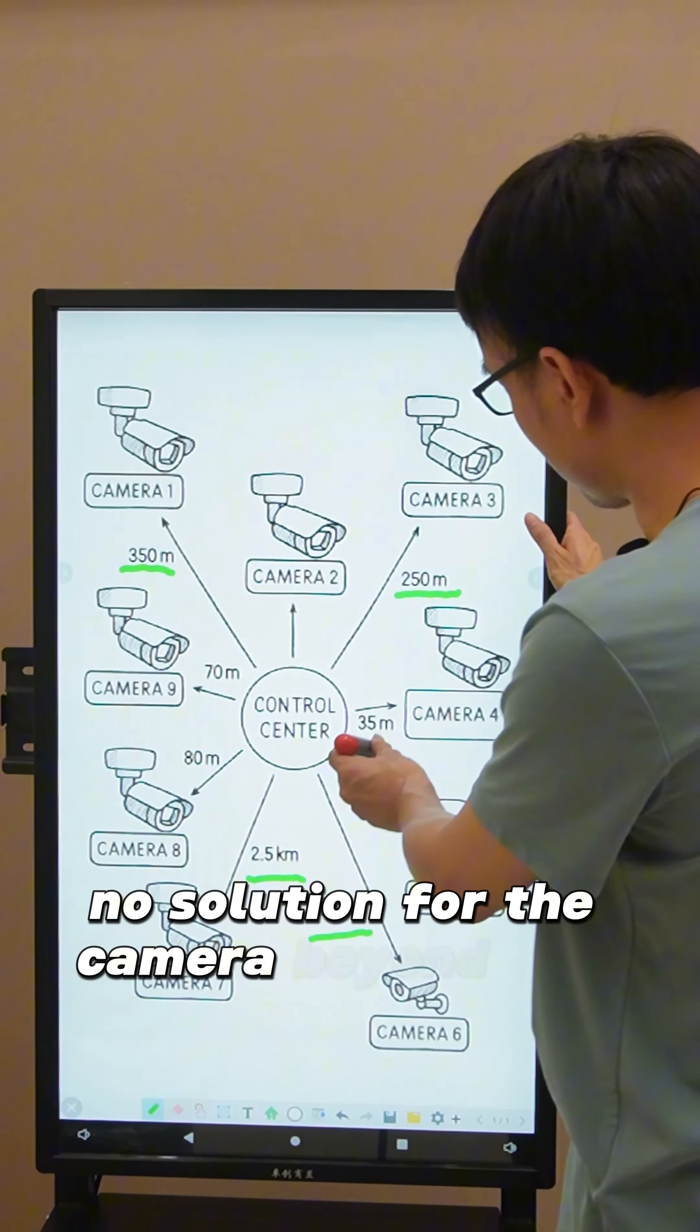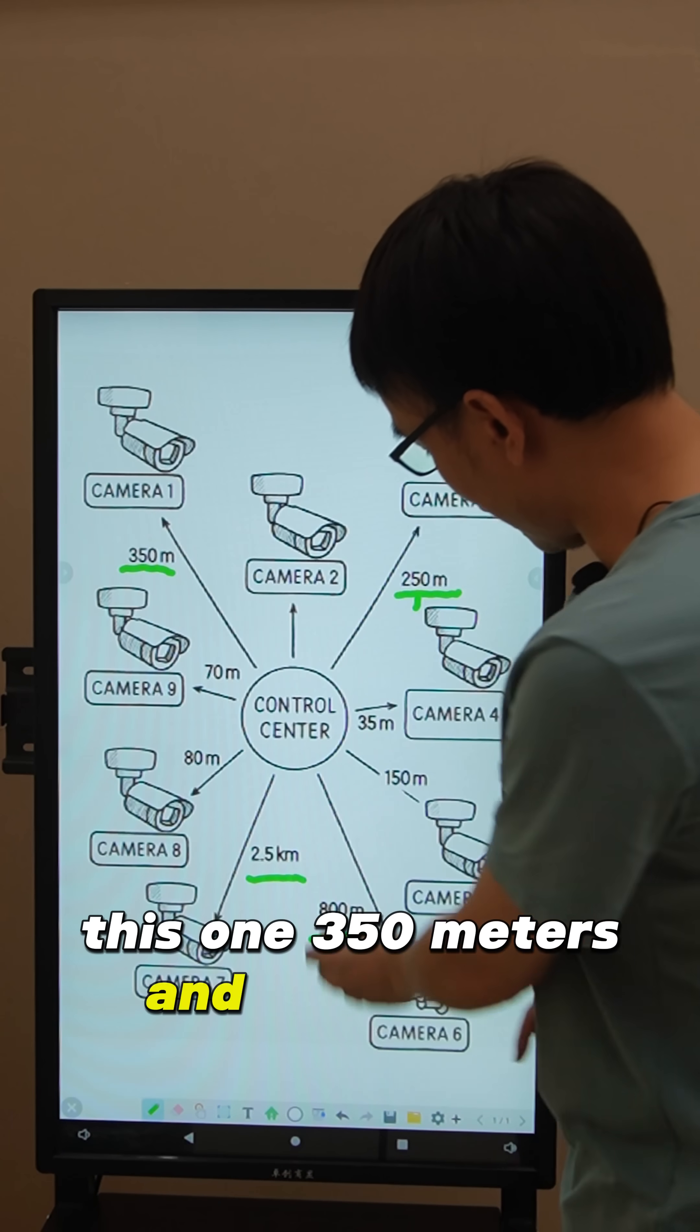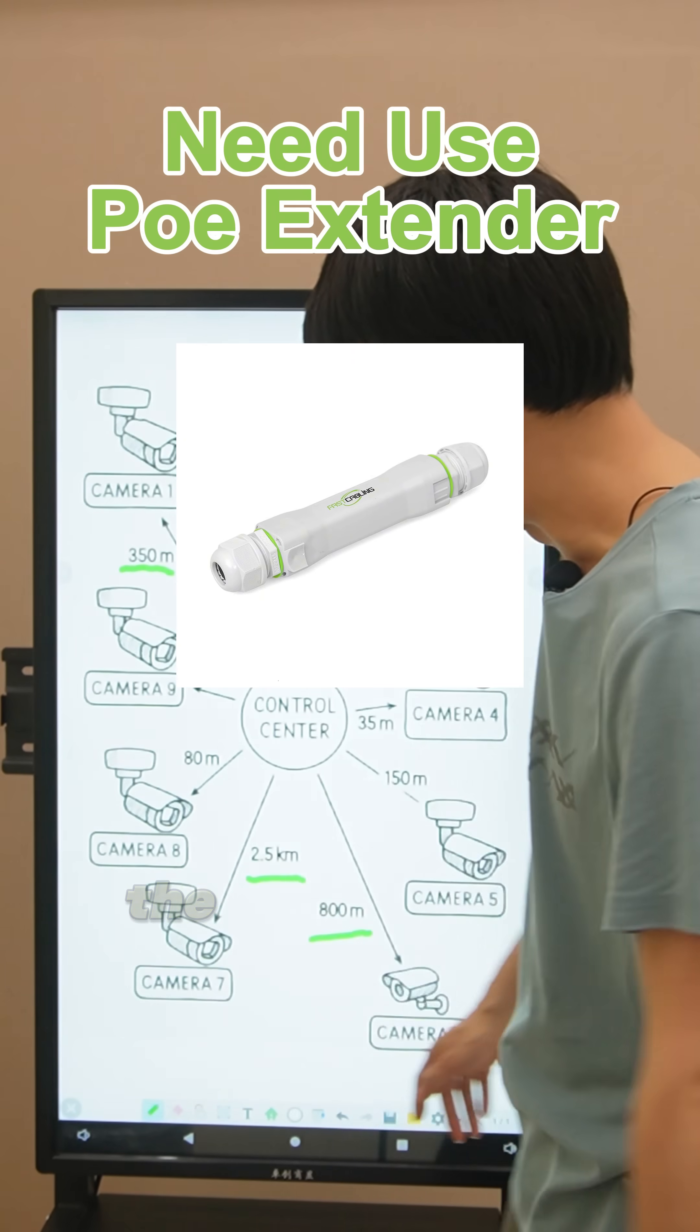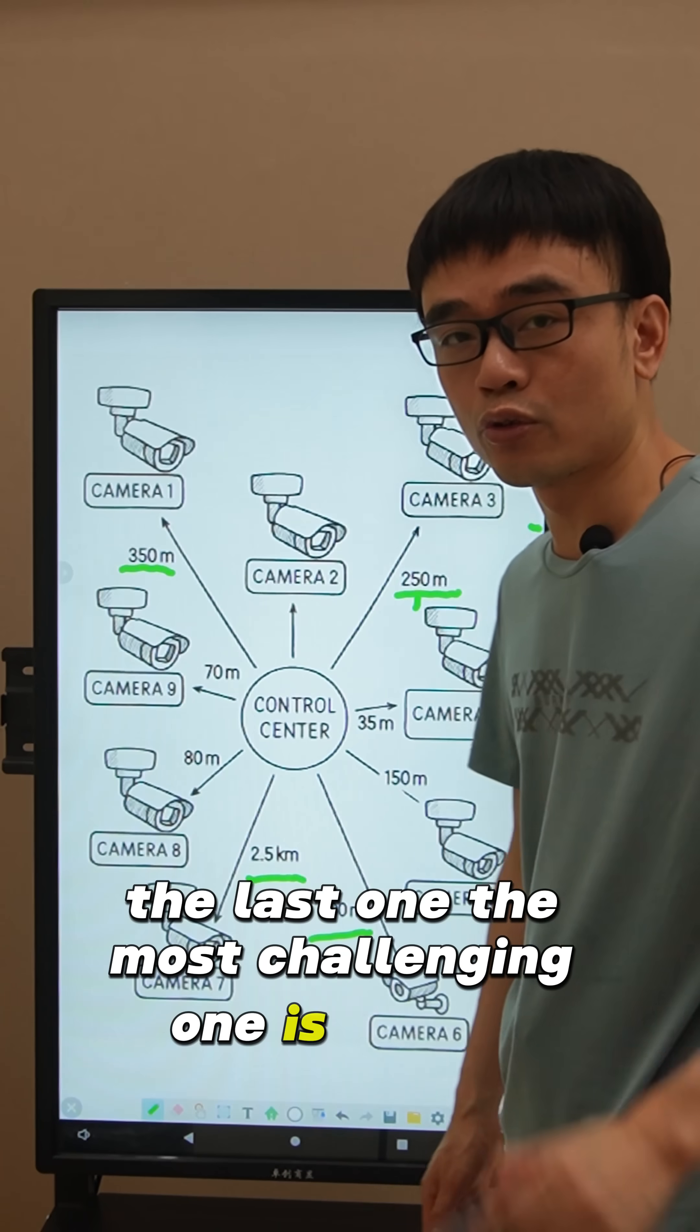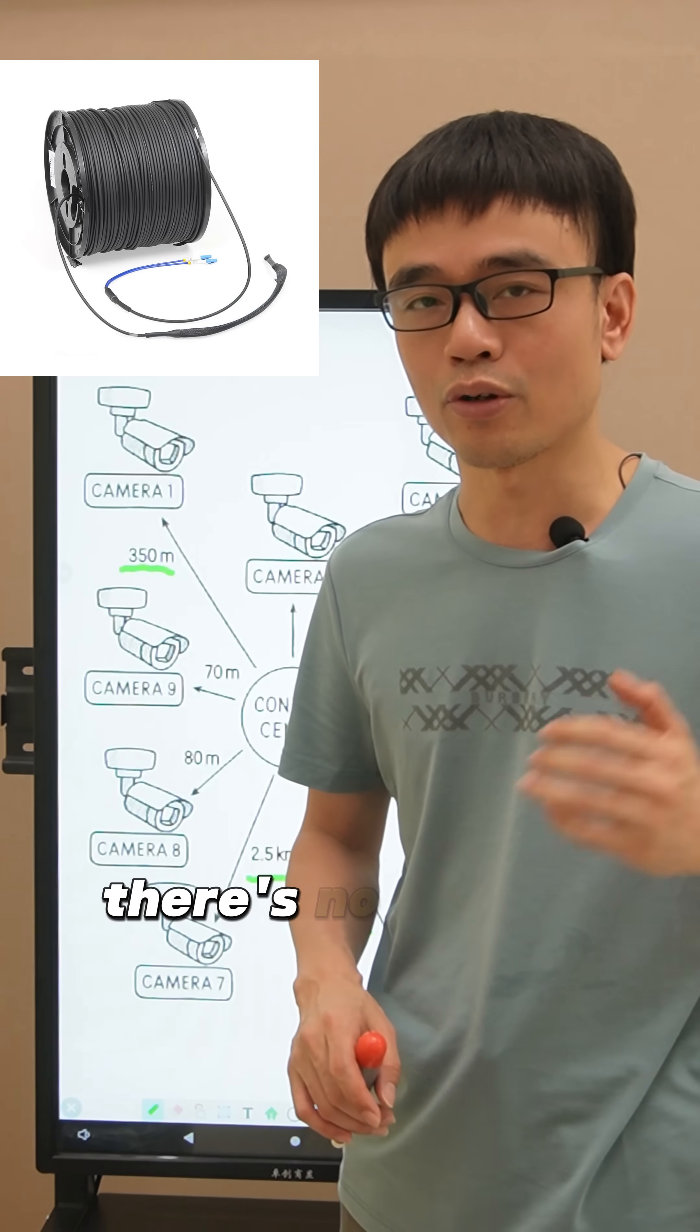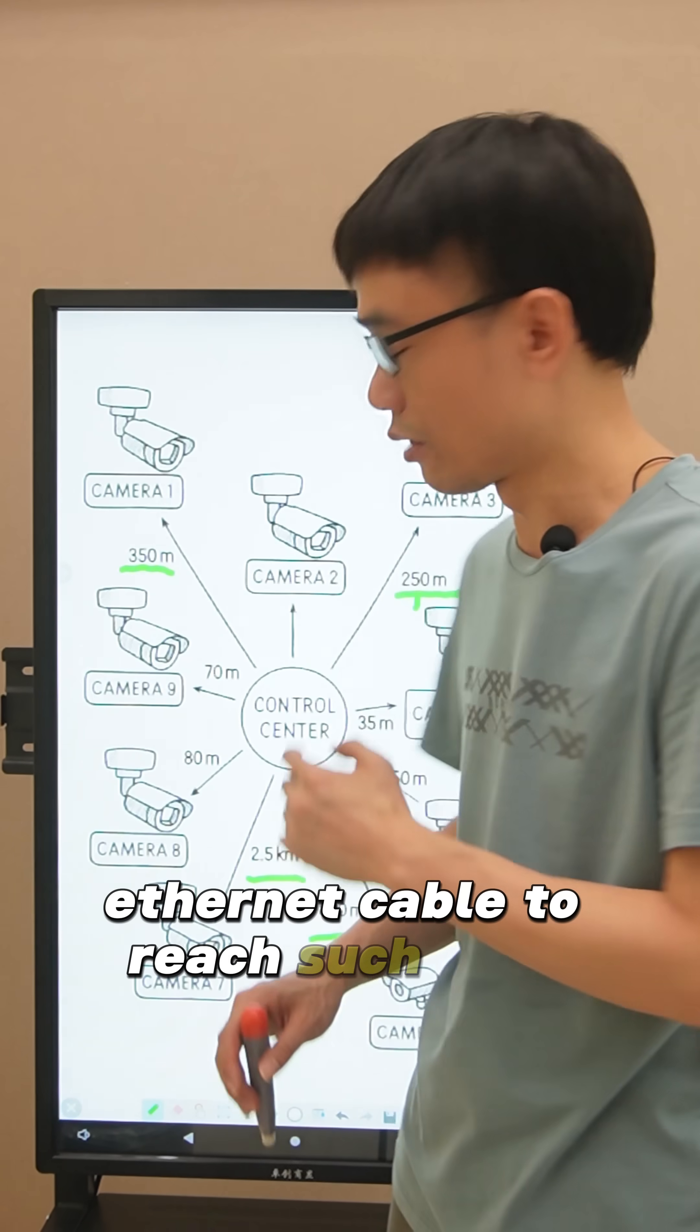For cameras beyond 250 meters, this one at 350 meters and the 800 meters, we do need to use the PoE extender. The last one, the most challenging one, is 2.5 kilometers. We need to use fiber optic cables. There's no way to use Cat5 or Cat6 ethernet cable to reach such long distance.